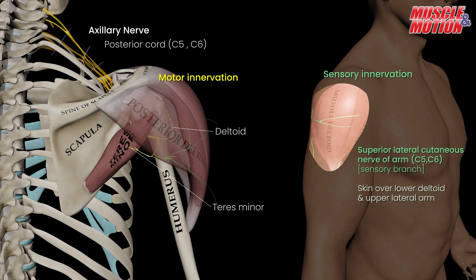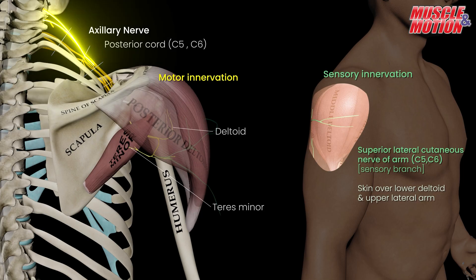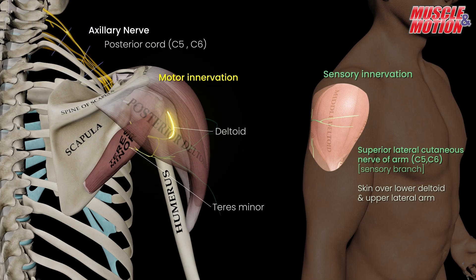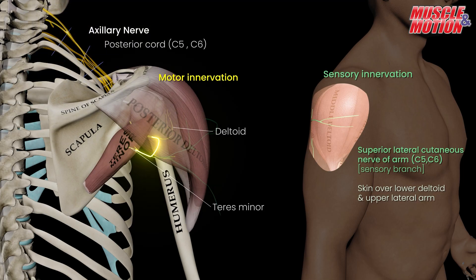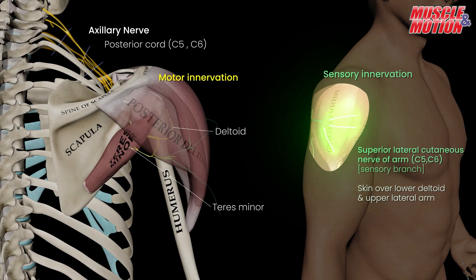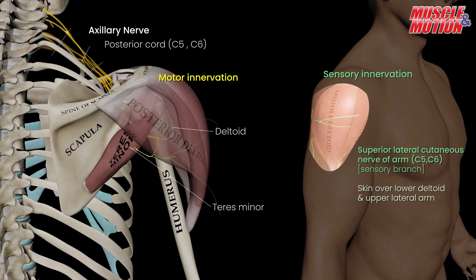In summary, the axillary nerve supplies motor innervation to the deltoid and teres minor muscles, and sensory innervation to the skin over the lower deltoid and upper lateral arm.